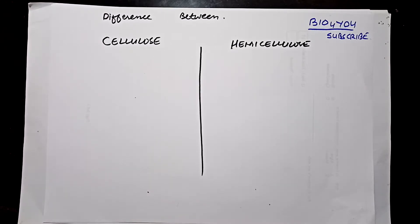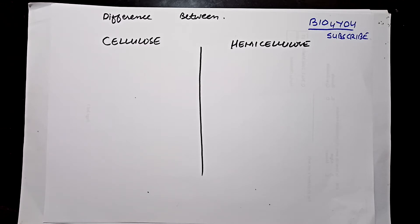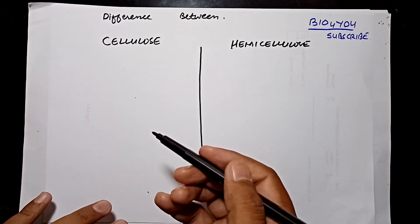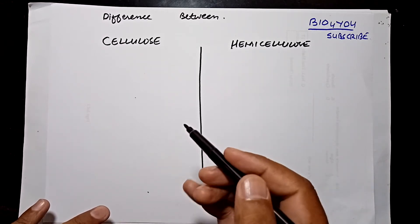Welcome to Bio For You. In today's lecture, we will look at the differences between cellulose and hemicellulose. Both are components of the cell wall — cellulose is the major component, while hemicellulose is the accessory part of the cell wall.